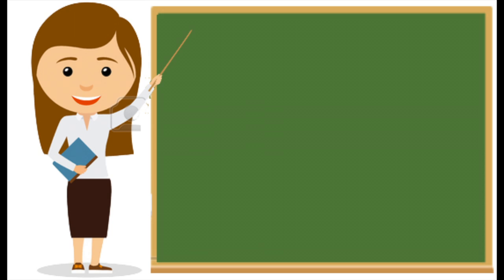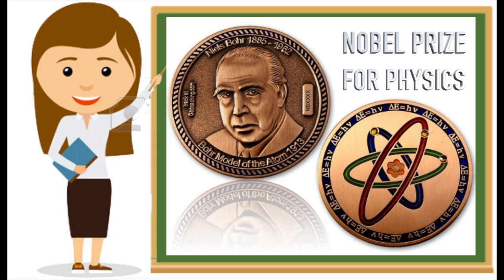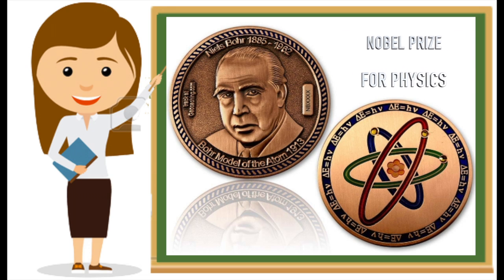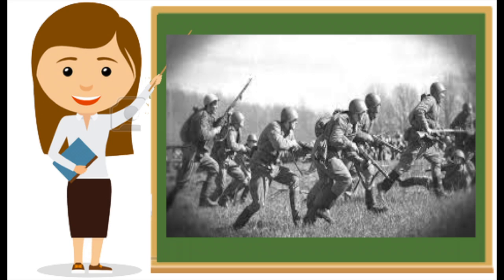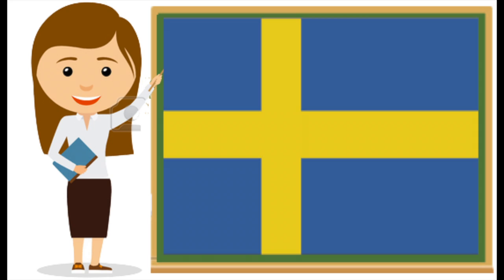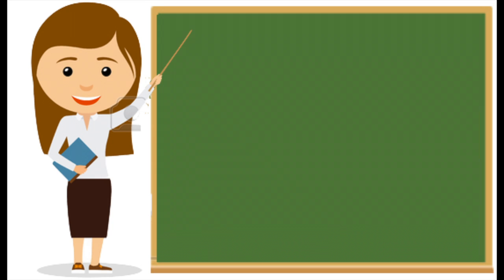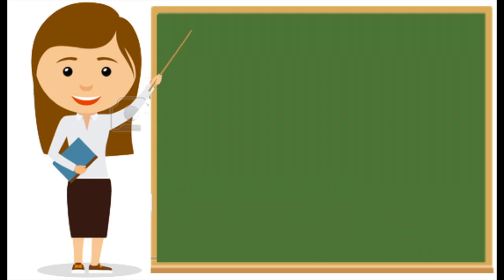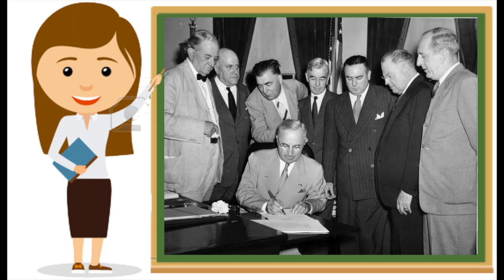In 1922, Niels Bohr received the Nobel Prize in Physics for his services in the investigation of the structure of atoms and of the radiation emanating from them, including his discovery of his own atomic model. Additionally, when World War II began, Bohr managed to escape to Sweden and stayed there for two years. In the last two years of the war, he moved to England and the United States, where he was involved in the atomic energy project.